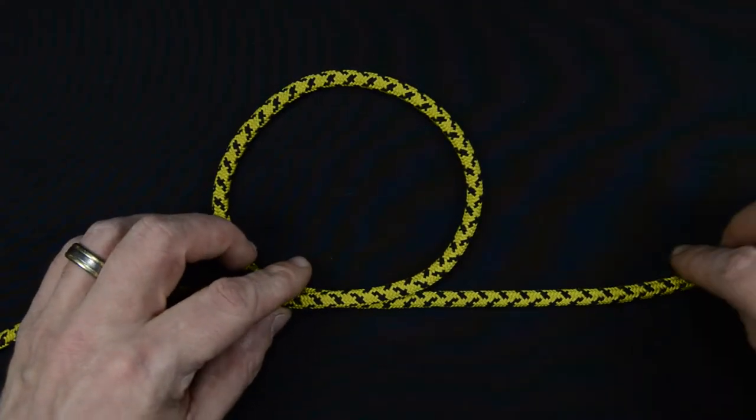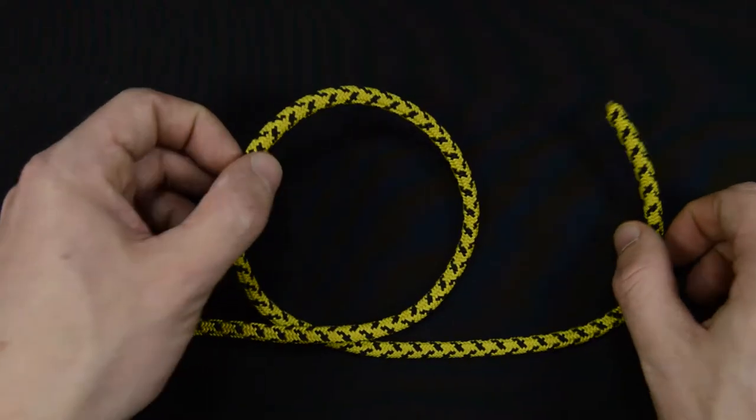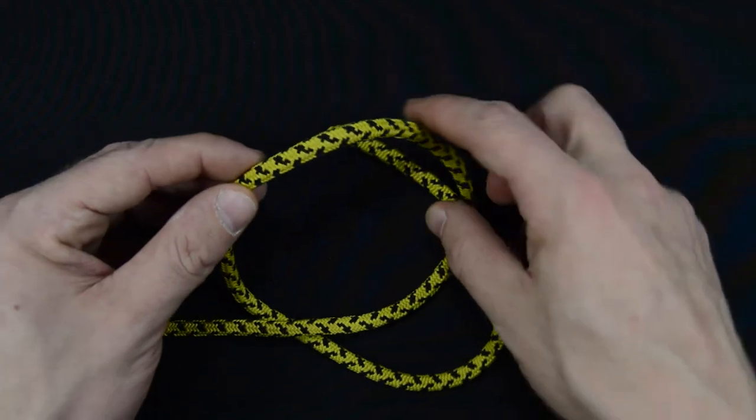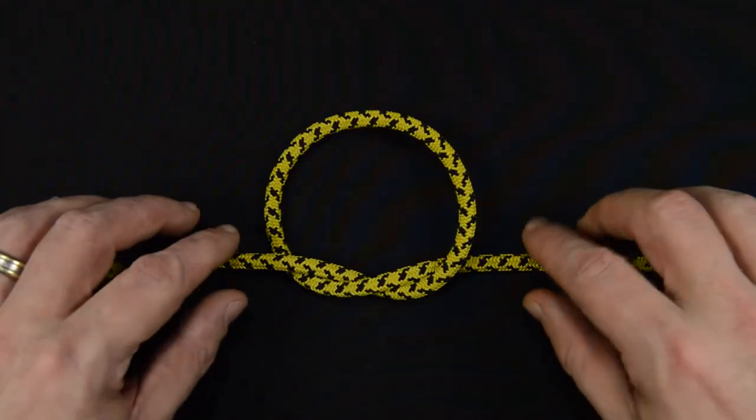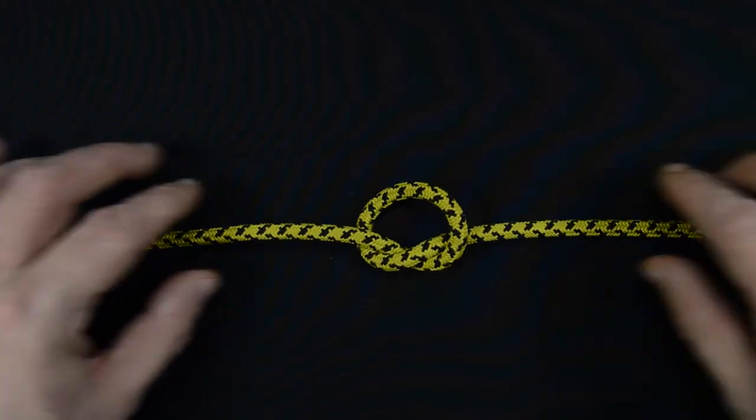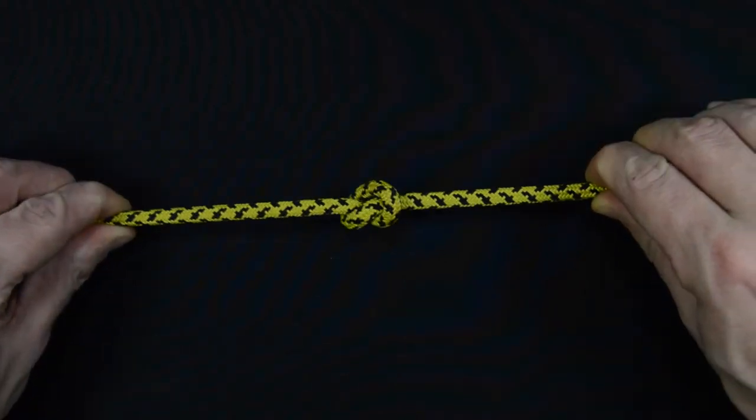To tie this knot, first make an overhand loop. Second, tuck the working end through the loop. Third, pull the working and standing end in opposite directions to tighten the knot.